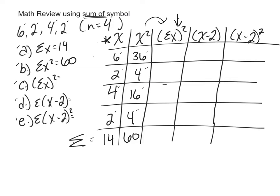Now sum of x squared, we just take sum of x, this number right here, and we square it. We don't really need to do any calculations. So sum of x squared is 14 squared, or 14 times 14, which is 196.